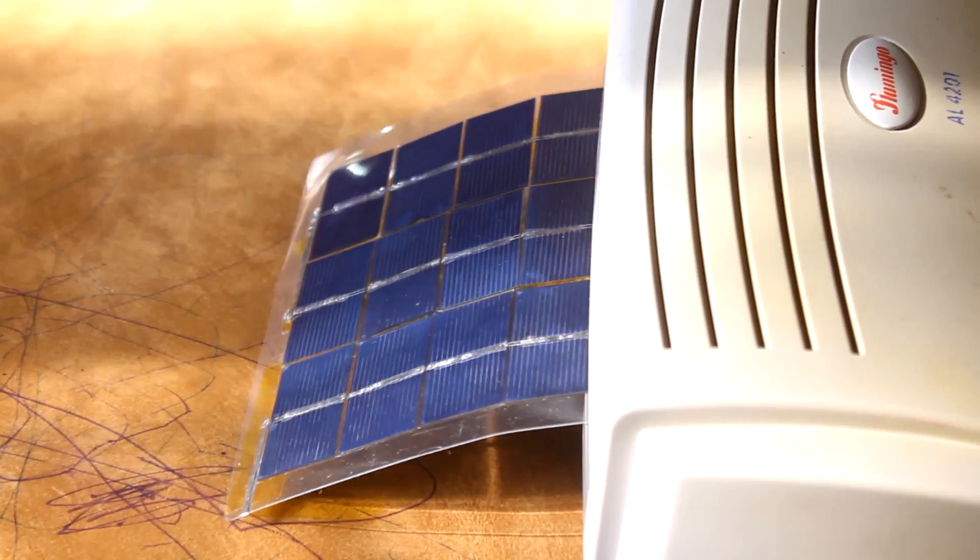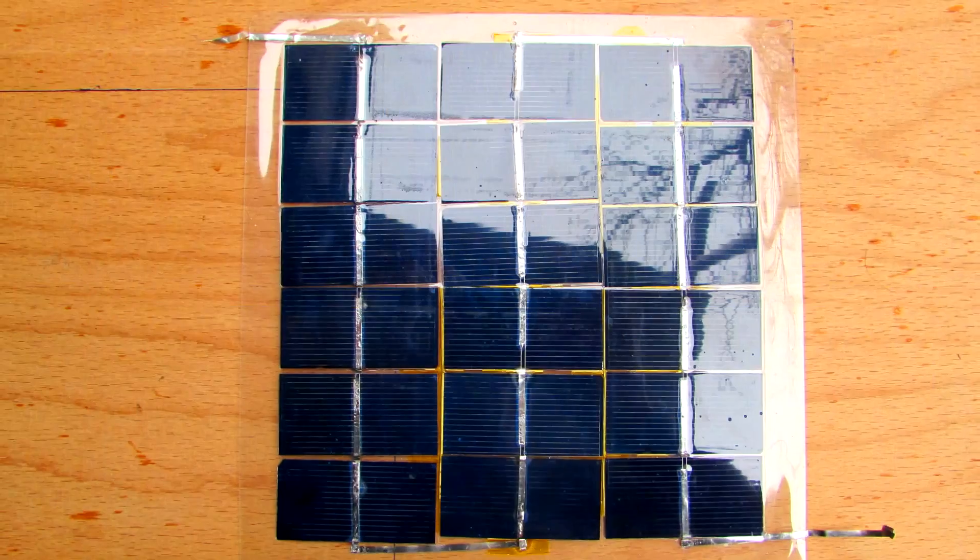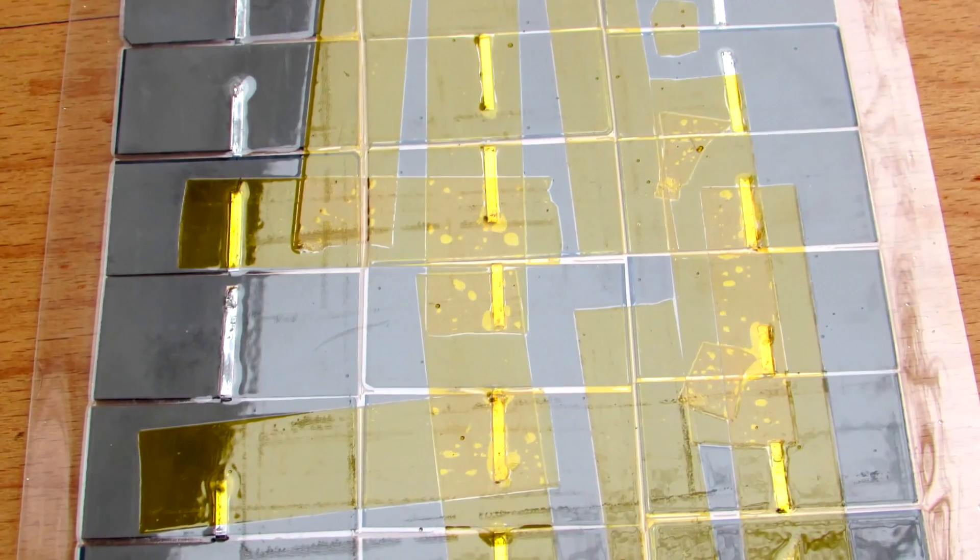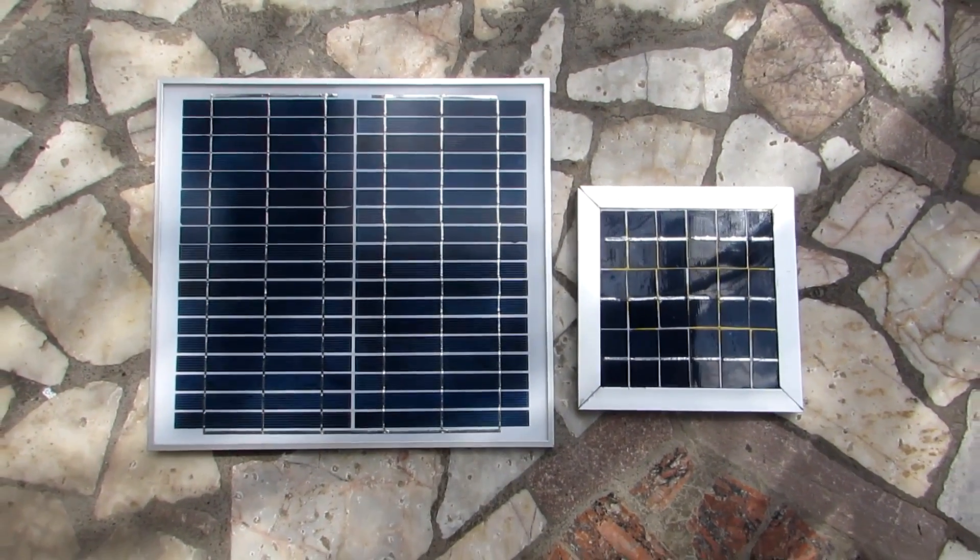The method was surprisingly effective. No cracks were observed. To increase the strength you can use several layers of film or fix it on a pre-cut piece of glass. You will get almost an industrial solar battery.